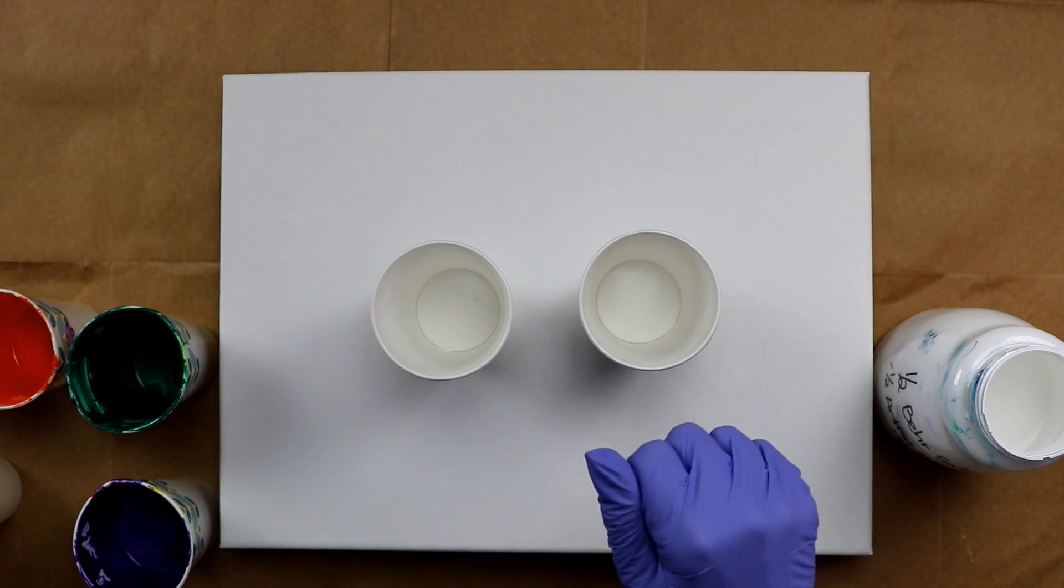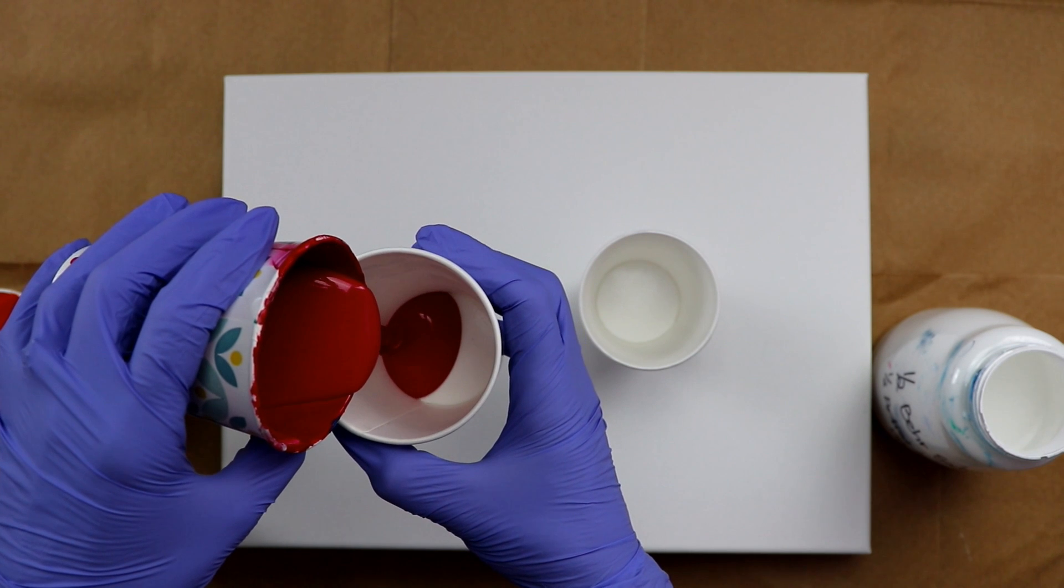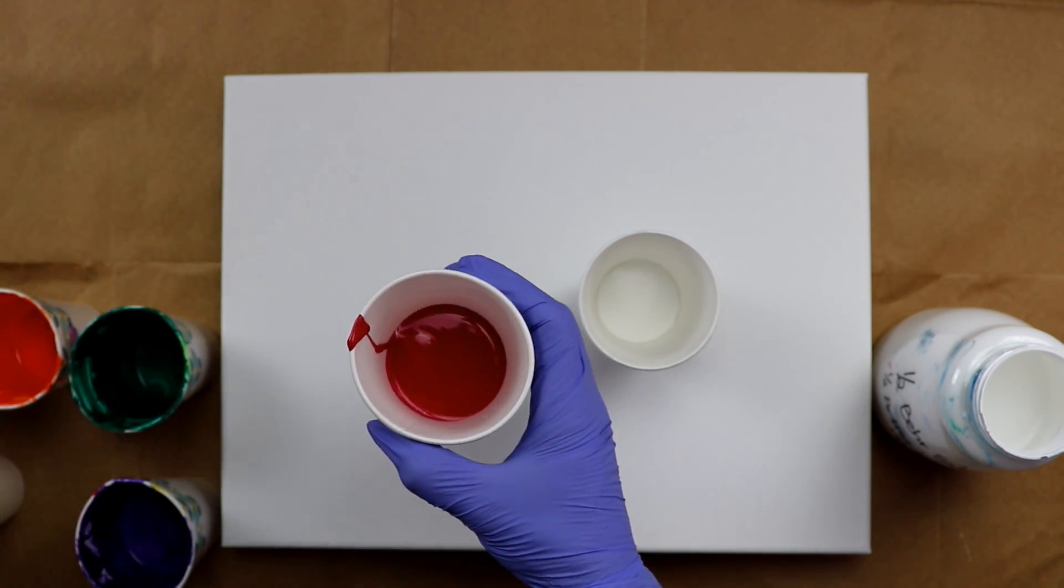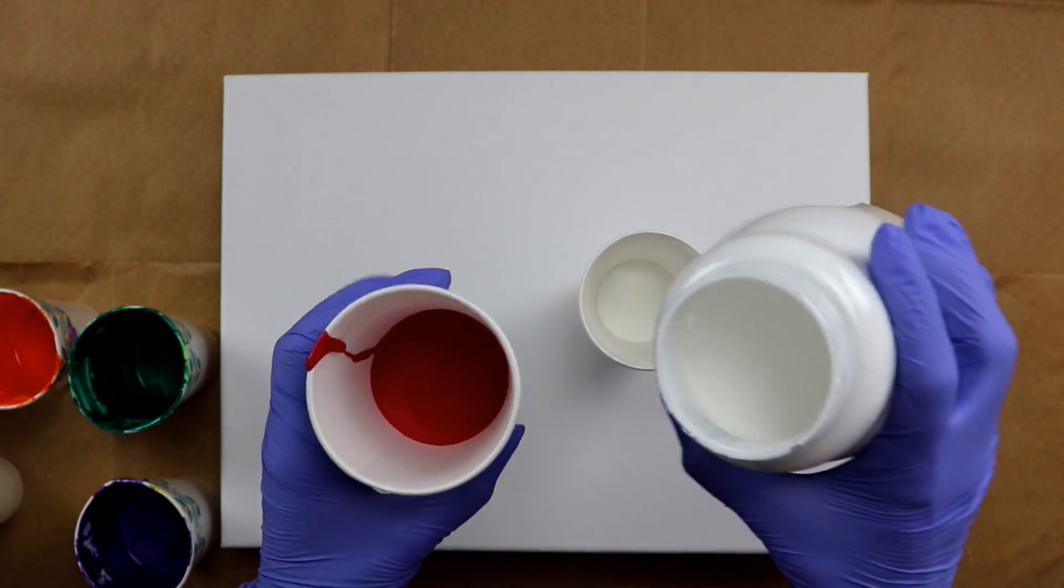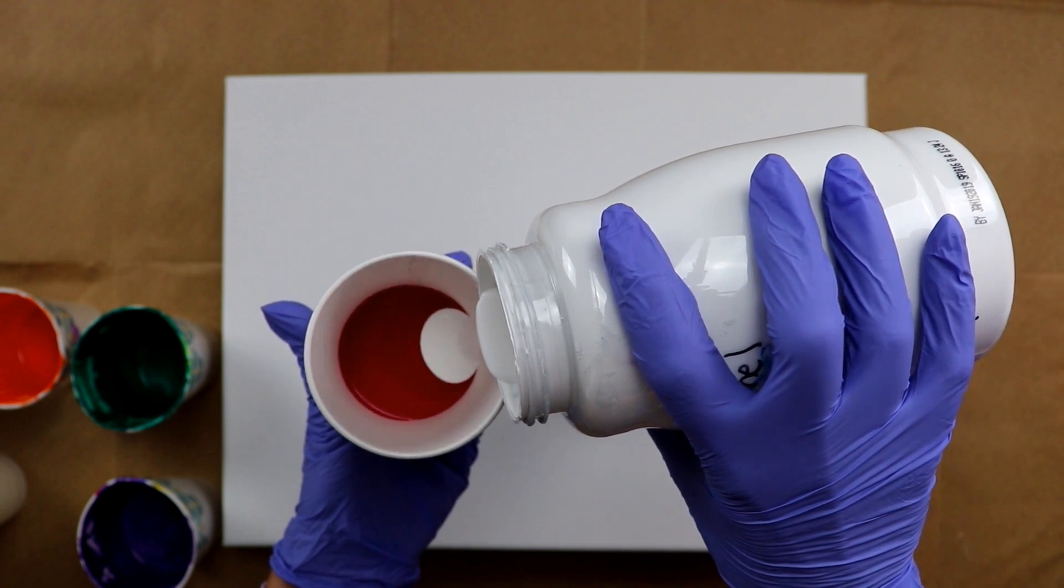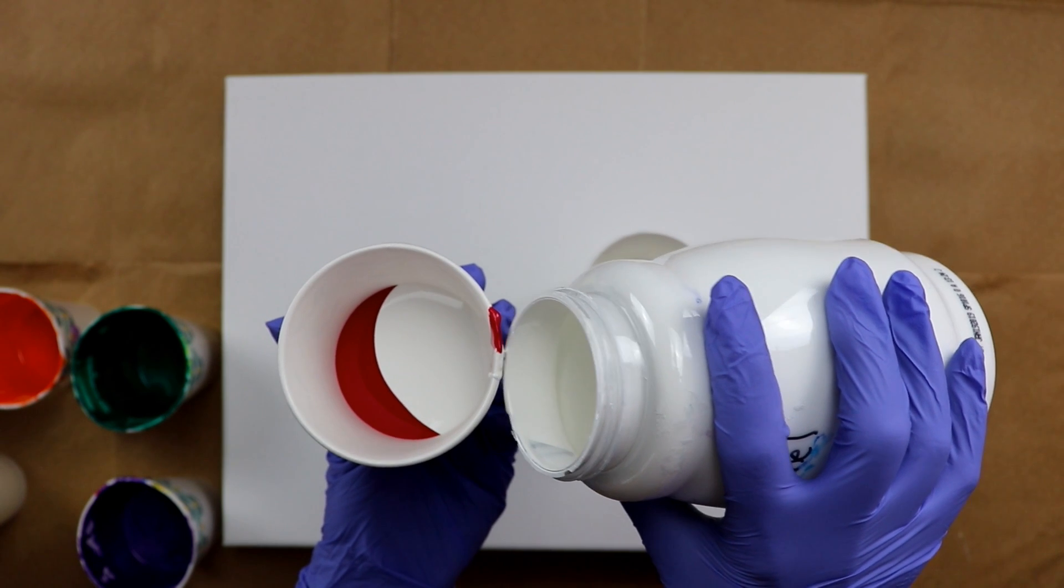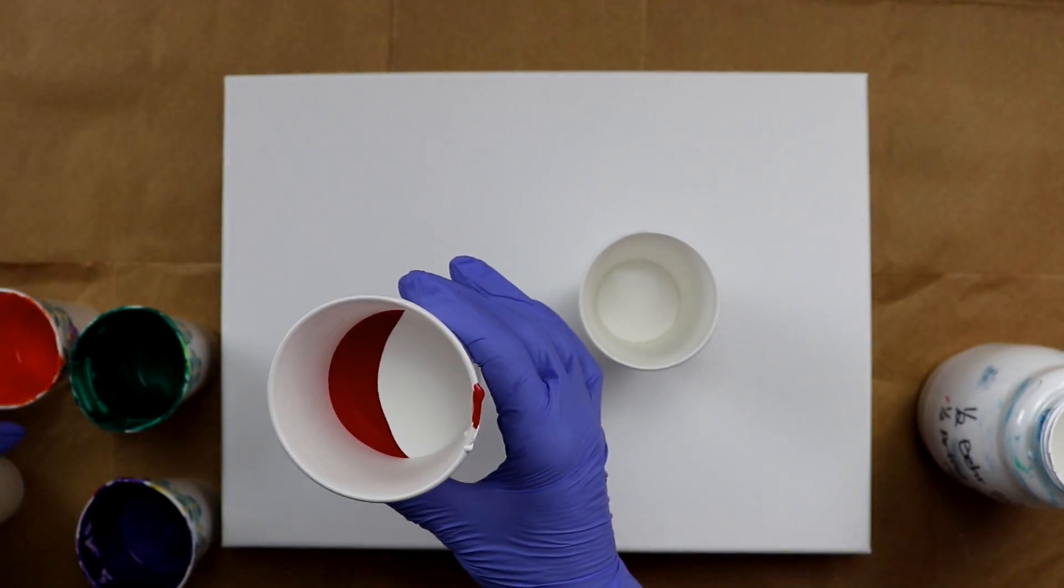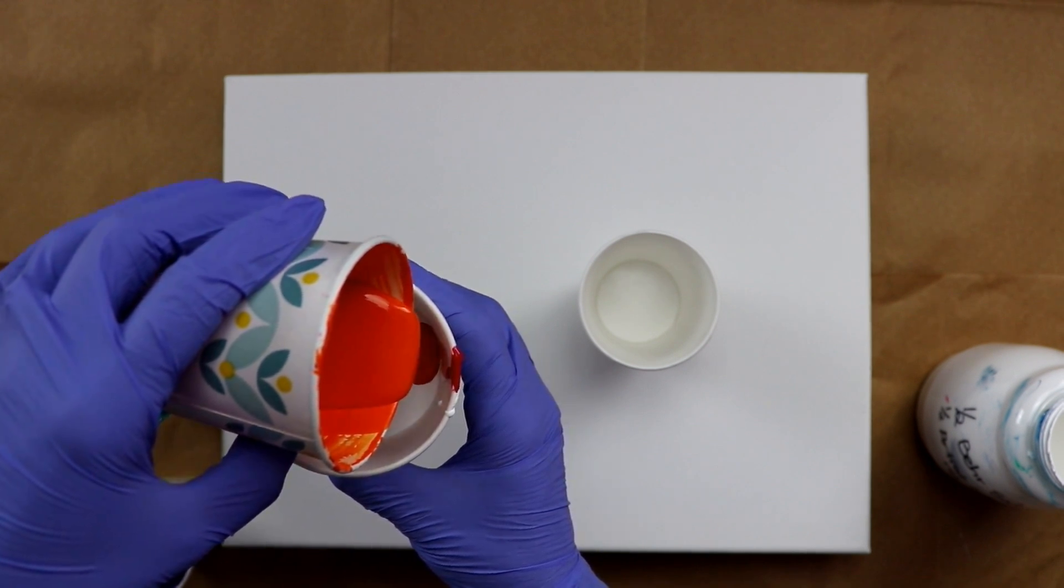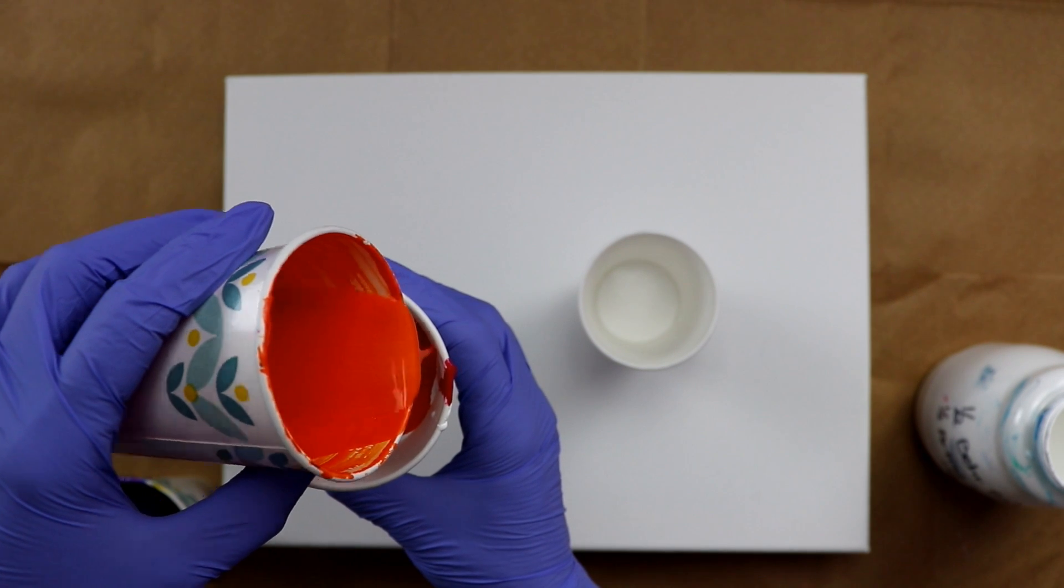Okay everybody, so I got my gloves on and I'm just going to go ahead and get started. I'm going to start with red in the first cup, and then I'm going to put some of the Cloud Effect White in there. Now all the paints are mixed with Liquitex Pouring Medium, Floetrol in Water, and all the colors have a little bit of Golden GAC mixed in.